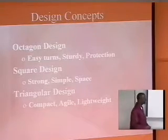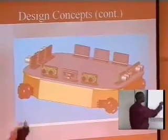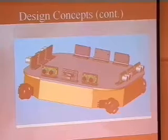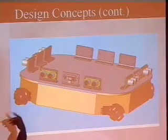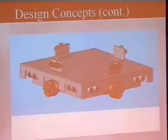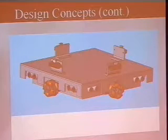Here we see the octagonal design — you can see the positioning of the wheels. These are the omnidirectional wheels with the rollers, which are able to move in any direction. Here we have the basic square design — a square robot with four wheels on either side. Next we have the triangular one, which is very compact, with sensors placed on the top.